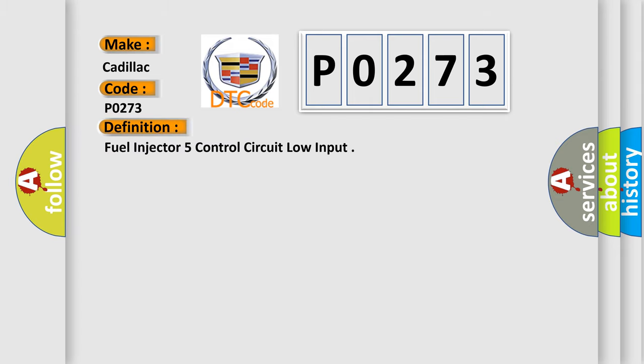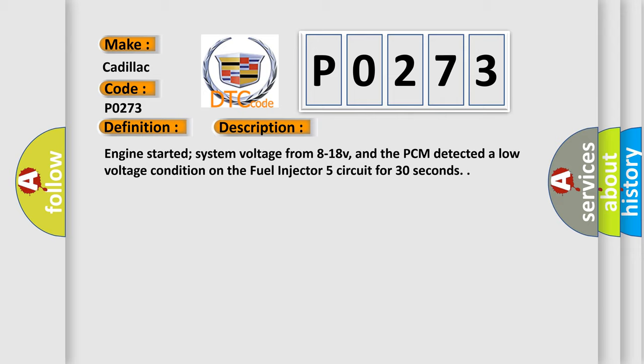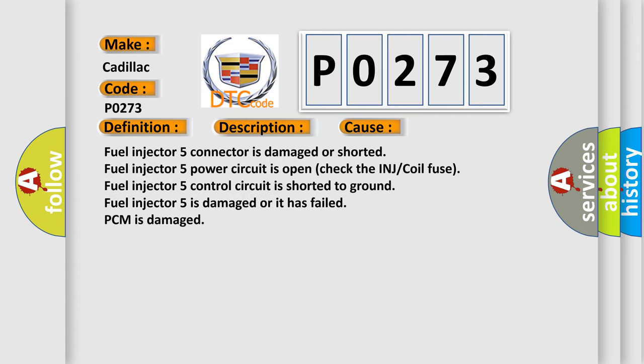The basic definition is: Fuel Injector 5 Control Circuit Low Input. The short description: engine started, system voltage from 8 to 18V, and the PCM detected a low voltage condition on the fuel injector 5 circuit for 30 seconds. This diagnostic error occurs most often in these cases: fuel injector 5 connector is damaged or shorted; fuel injector 5 power circuit is open; check the INJ or coil fuse; fuel injector 5 control circuit is shorted to ground; fuel injector 5 is damaged or has failed; or the PCM is damaged.